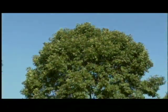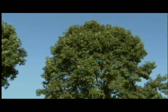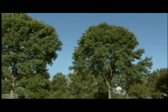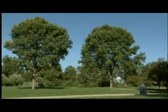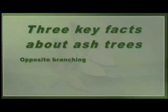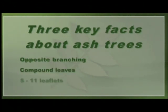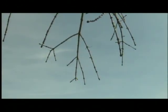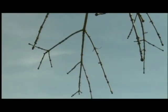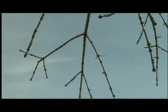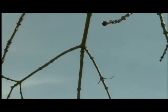Here's how you can tell ash trees from other common trees. All native ash trees and the various landscape varieties you might have in your yard have three traits in common: opposite branching, compound leaves each of which has 5 to 11 leaflets, and opposite branching means that the twigs and leaves of the tree are attached directly across from each other.